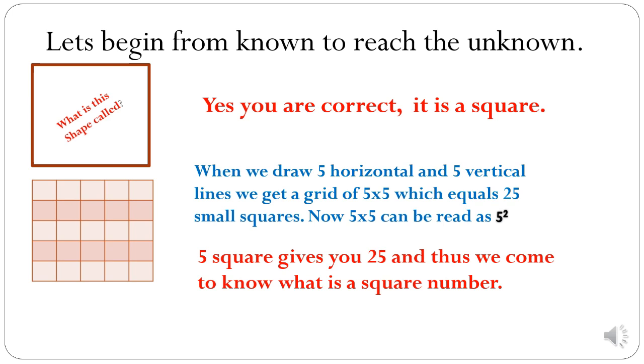We got 25 small square divisions. We can say that 5 into 5 that is equal to 25 small square units. It can also be read as 5 square equal to 25. Here we have reached to the first concept of our chapter squares and square roots.